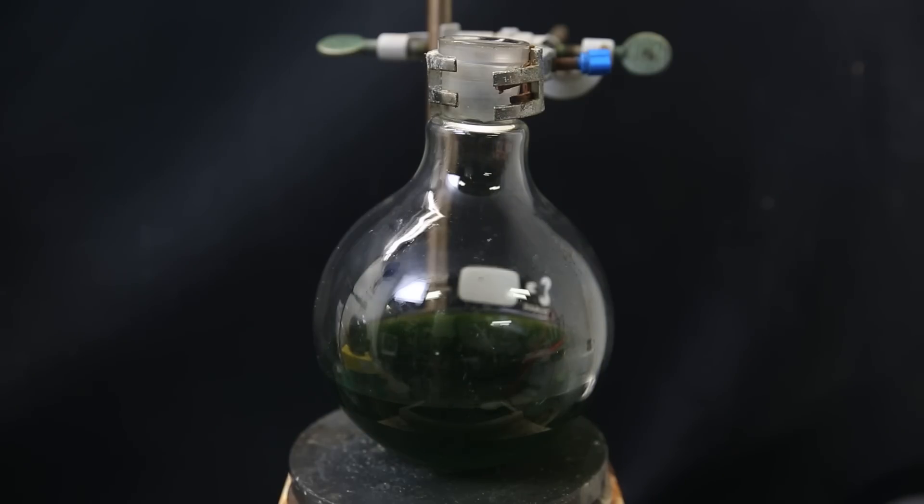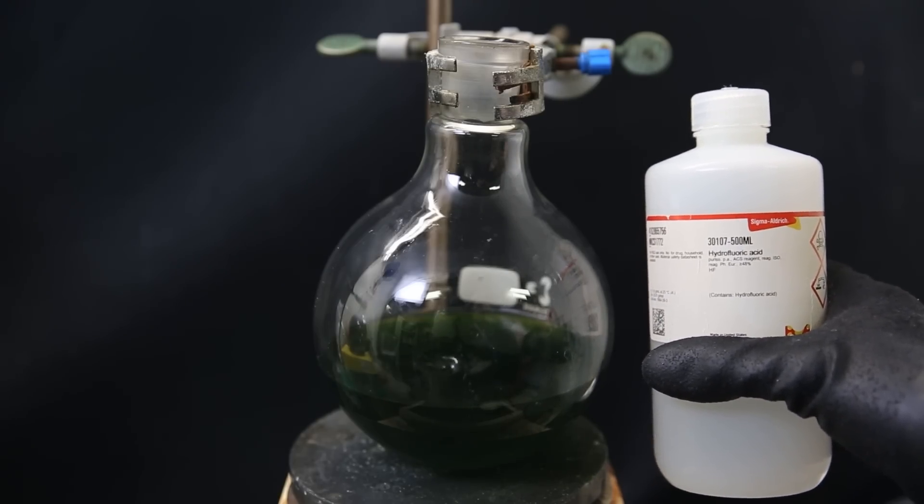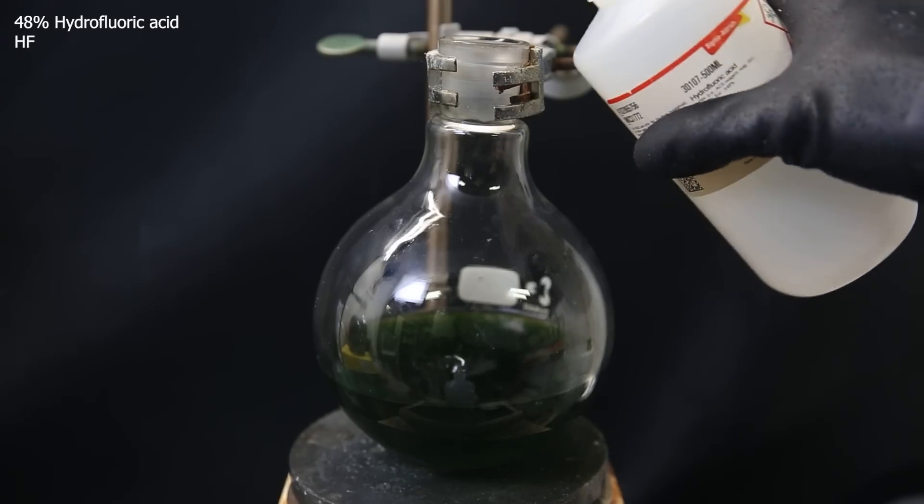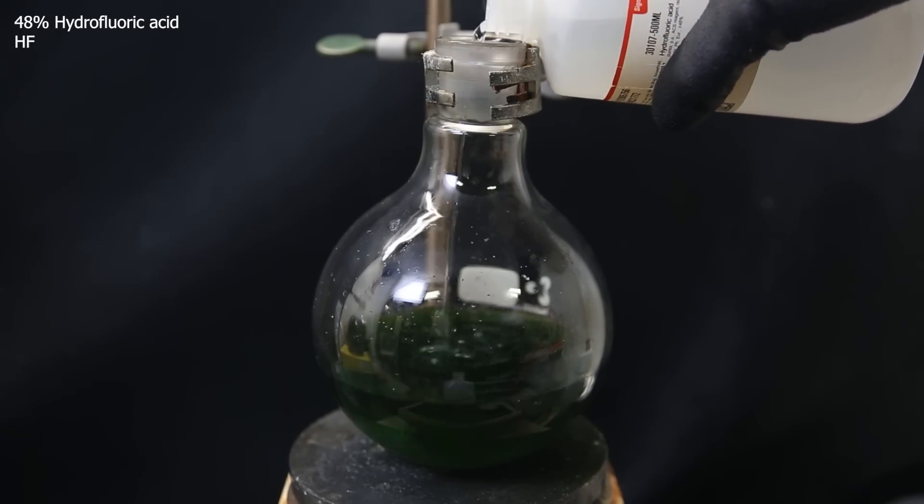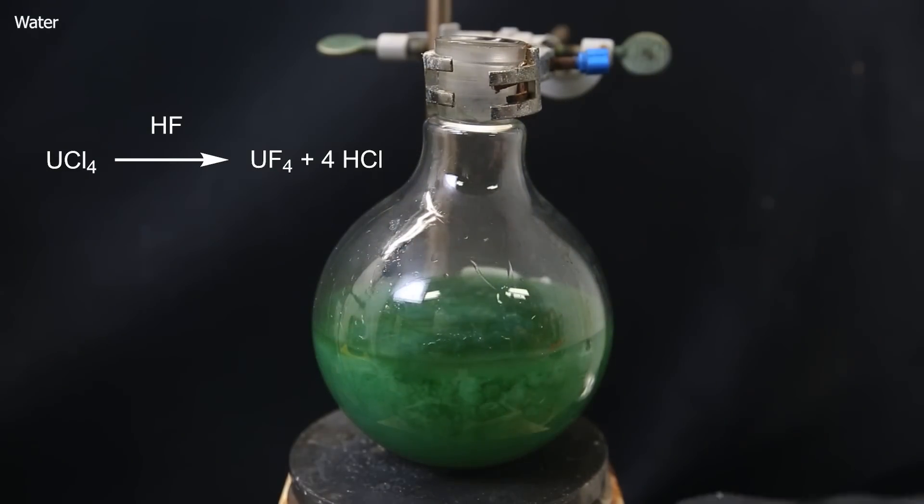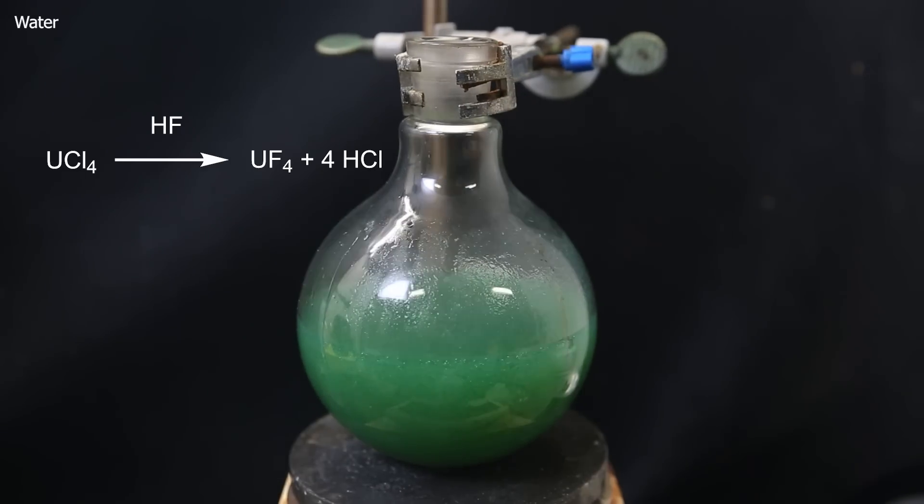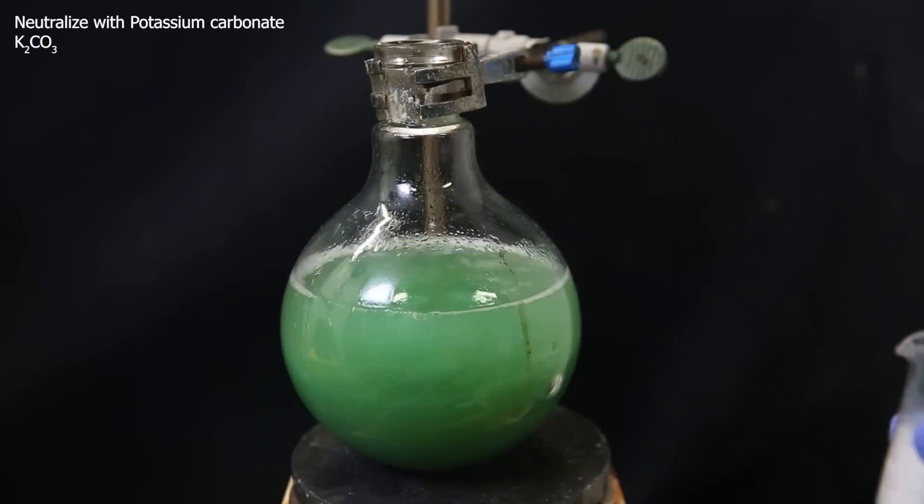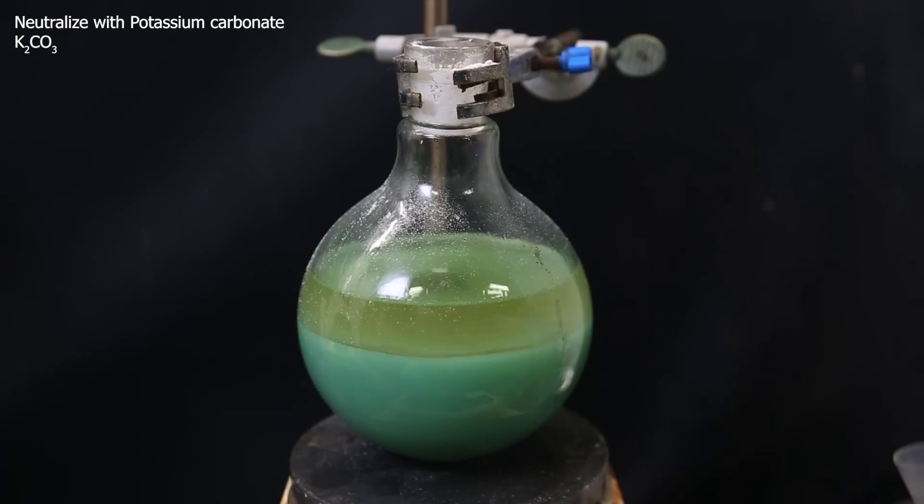Now that I have a solution containing uranium tetrachloride, I can convert it easily to uranium tetrafluoride. For that, I only need hydrofluoric acid. So to the solution, I add a random excess of 48% hydrofluoric acid. A solid precipitates, and I immediately add water to dilute it. All of the uranium tetrachloride immediately converts to uranium tetrafluoride, so I can destroy all the excess acid by adding the base potassium carbonate, until it stops bubbling from the addition.